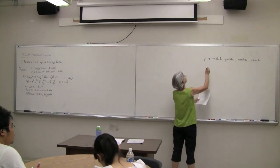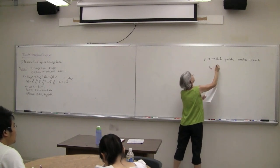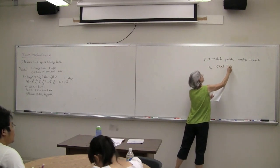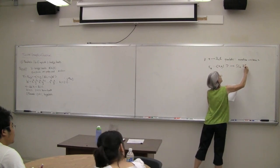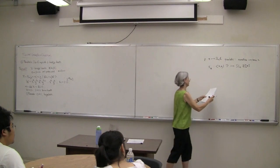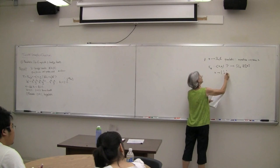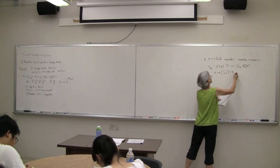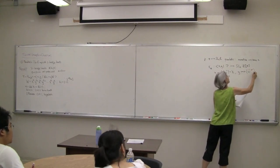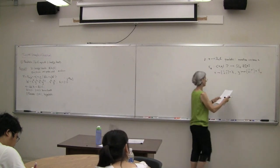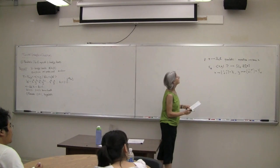Let me be a little formal. I'll take gamma sub W from the free group on X and Y to SL2C bracket W, where W is an indeterminate. Then X just goes to the matrix (1,1; 0,1), which I'll call capital X, and Y goes to the matrix (1,0; W,1), which I'll call the matrix with entry W. SL2C[W] are matrices with determinant 1.